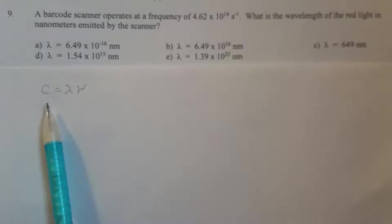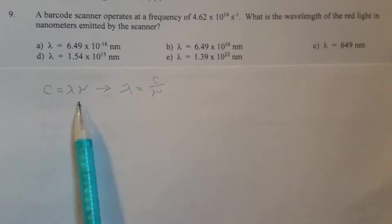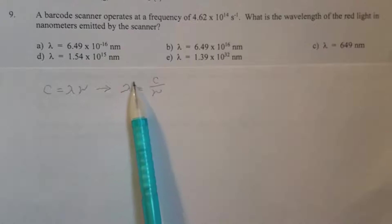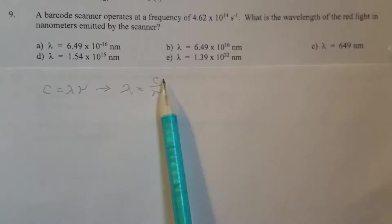Now you need to recall one of the two key equations that describes the property of light. So if you remember this key equation, you can easily develop this equation, the second one, so lambda can be calculated by the speed of light and the frequency.